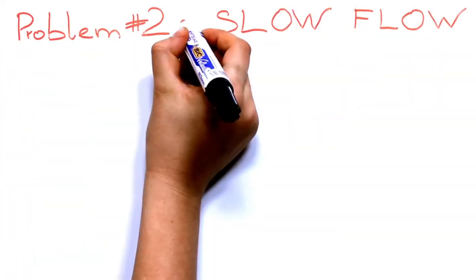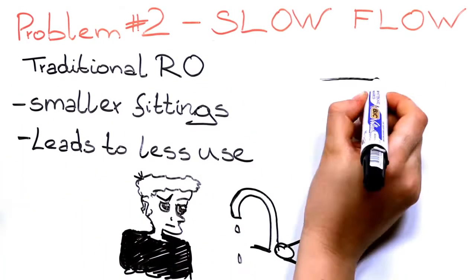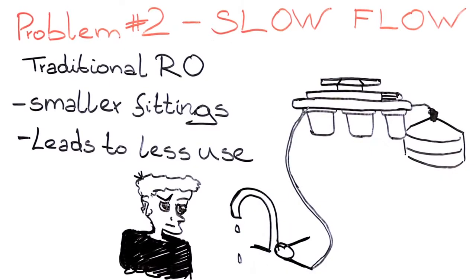Problem number two, slow flow. The slow flow from the traditional RO faucet is caused by their smaller fittings and tubing. This leads to less use as you become frustrated with wasting your valuable time.